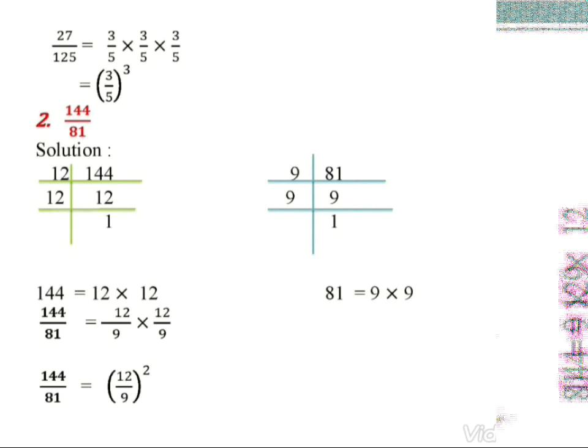Similarly, for 144/81: find the factors of 144 and 81. 144 = 12×12, so 144 = 12². And 81 = 9×9, so 81 = 9². Therefore 144/81 = (12/9) × (12/9), meaning 144/81 = (12/9)². Since both have 2 factors, the exponent is 2.